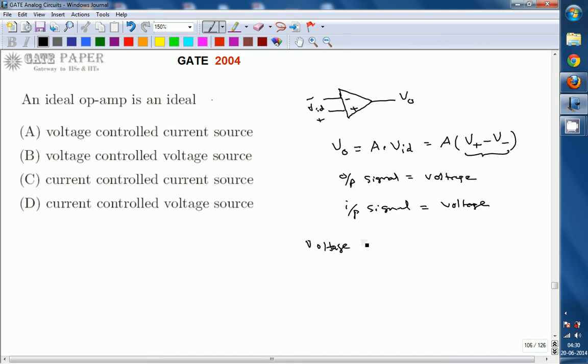That is output voltage is controlled with input voltage source. Voltage controlled voltage source. So op amp is going to be treated as, ideally, voltage controlled voltage source. VCVS. So the right answer for this one is B. Voltage controlled voltage source.